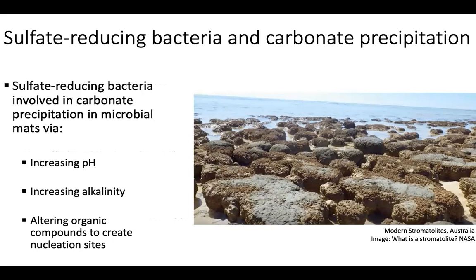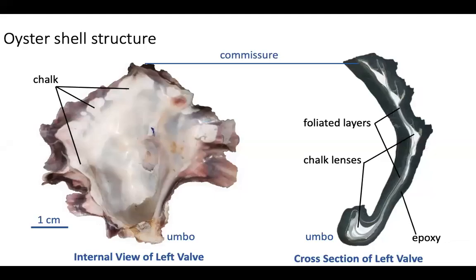Sulfate-reducing bacteria are of particular interest because they're involved in carbonate precipitation in microbial mats. They're able to affect carbonate chemistry primarily through three main processes: bacterial sulfate reduction might increase the pH, increase the alkalinity, and alter organic compounds to affect nucleation sites — all of which, depending on the substrate, might favor carbonate precipitation.